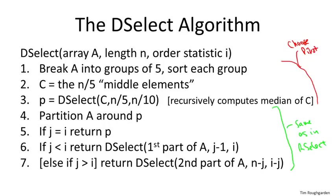You'd be right to be a little skeptical of that claim. This is an unusually extravagant algorithm in two senses for something that's going to run in linear time. First is its extravagant use of recursion — there are two different recursive calls, and we have not yet seen any algorithm that makes two recursive calls and runs in linear time. The best case was always n log n, like merge sort or quick sort.